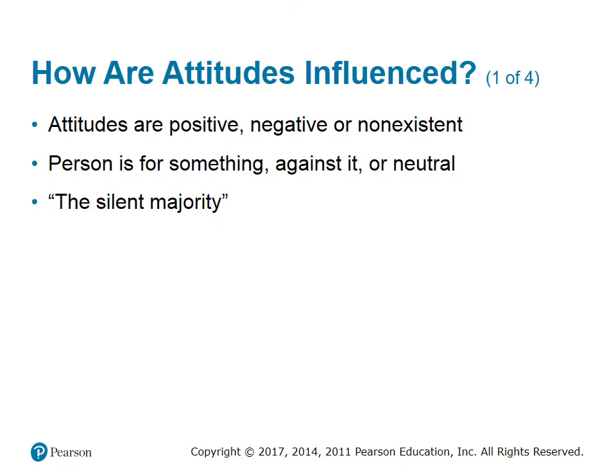How are attitudes influenced? Attitudes are positive, negative, or non-existent. A person is for something, against it, or neutral. Studies show that for any one issue, most people don't care much one way or another. The majority of people do not have strong opinions — they are stuck in the middle. U.S. Vice President Spiro Agnew called this group the 'silent majority,' the people stuck in the middle.